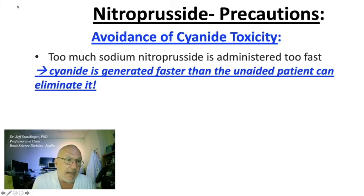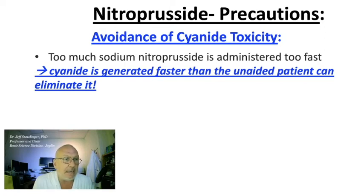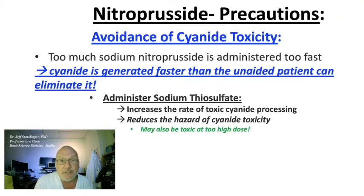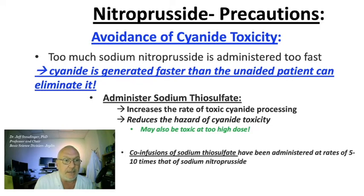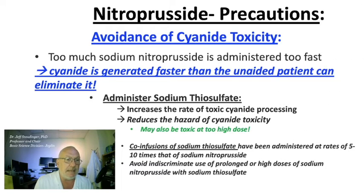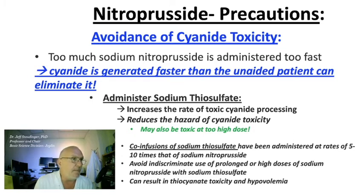When using this drug, clinicians need to take great care to avoid cyanide toxicity. Too much of this drug too fast means cyanide is generated faster than the unaided patient can eliminate it. You administer sodium thiosulfate as something of an antidote — sodium thiosulfate increases the rate of toxic cyanide processing, thereby reducing the hazard of cyanide toxicity. As Paracelsus, the father of toxicology, tells us: everything is toxic, it's just a question of dose. Sodium thiosulfate itself may also be toxic at too high a dose. Co-infusions of sodium thiosulfate have been administered at rates of 5 to 10 times that of sodium nitroprusside, but thiocyanate toxicity will develop and produce hypovolemia if this is done for too long.